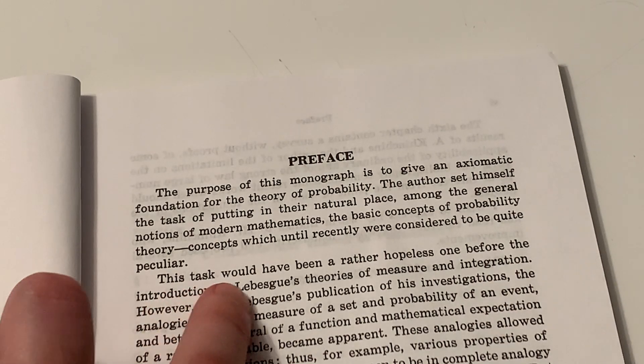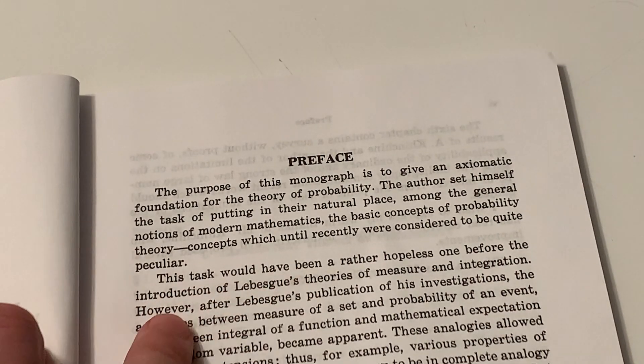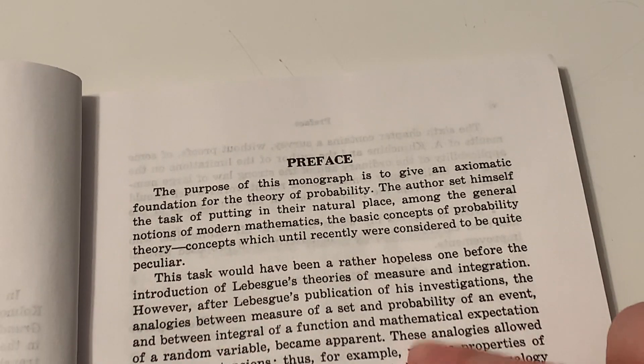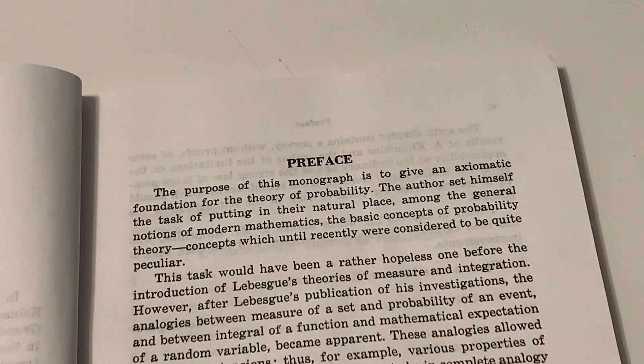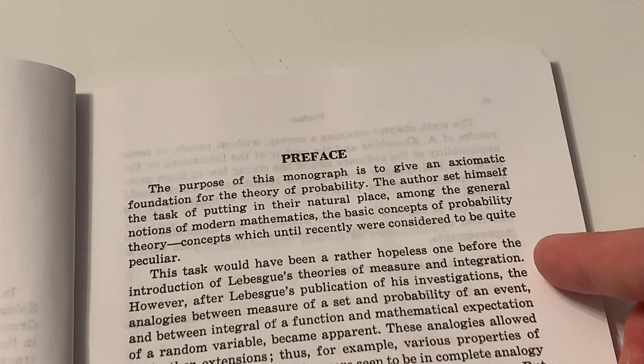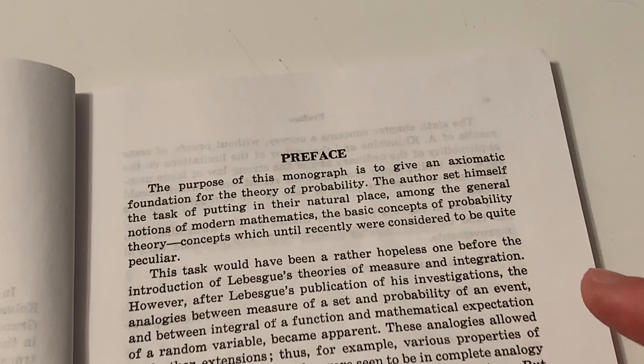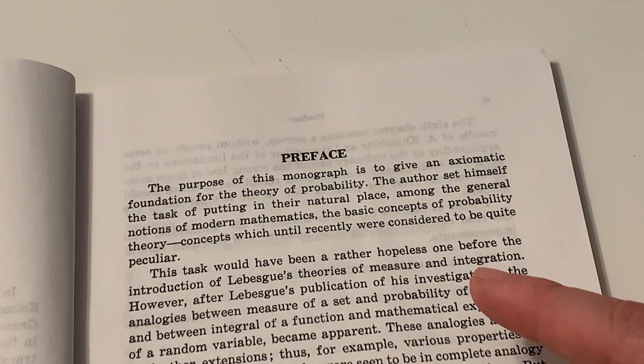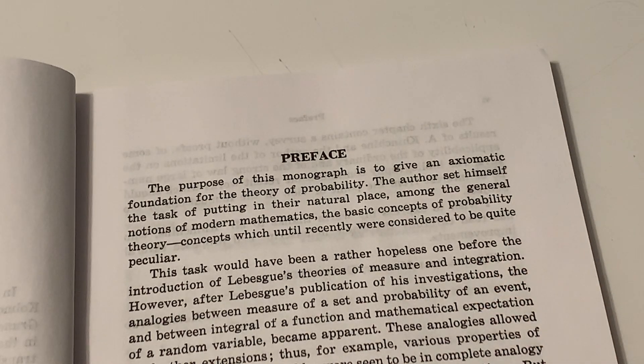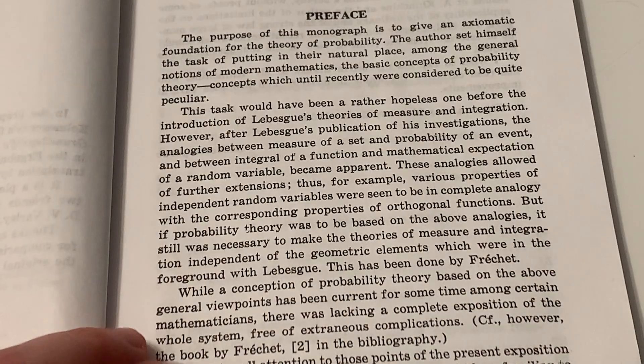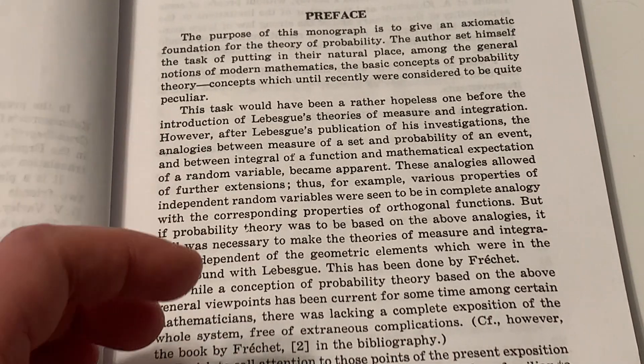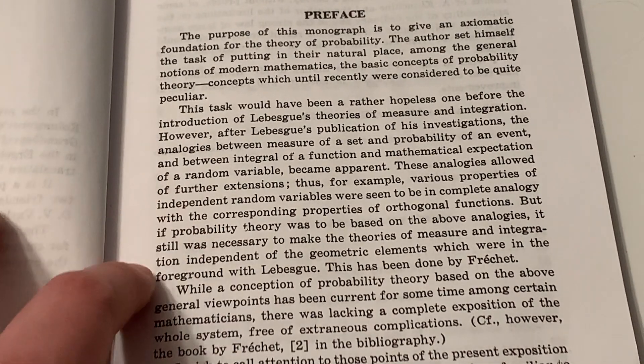This task would have been rather hopeless before the introduction of Lebesgue's theory of measure integration. And indeed, Lebesgue's theory of measure integration is now the framework and language of modern probability theory. So much so that it seems like modern probability theory is just a sub-branch of Lebesgue's theory of measure integration. And that is not completely true, because probability theory still has its own unique objectives and notions that have no equivalence in measure theory.